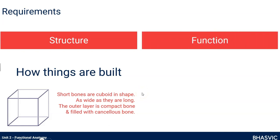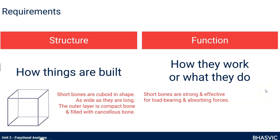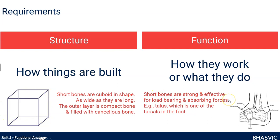We also need to know how each part of the body systems works — what job it has. Short bones are strong and effective for load bearing and absorbing forces. Because of this structure and design, our short bones are really good for dealing with big forces. We'd find short bones in our wrist and in our heel.